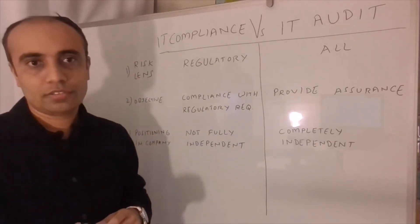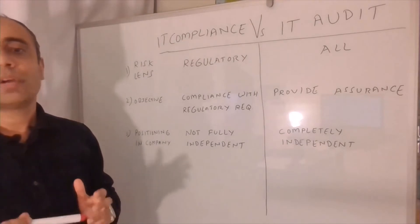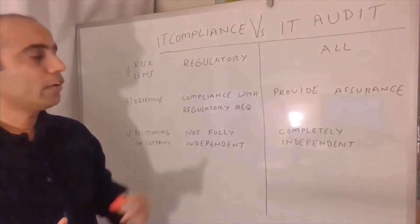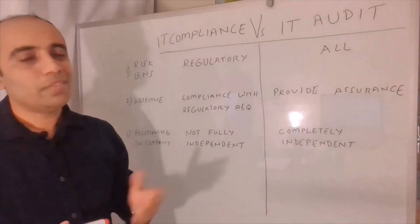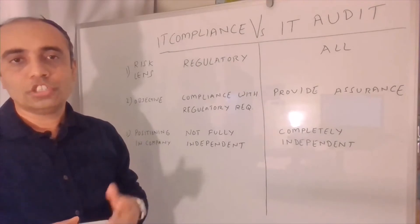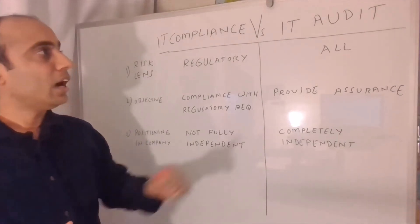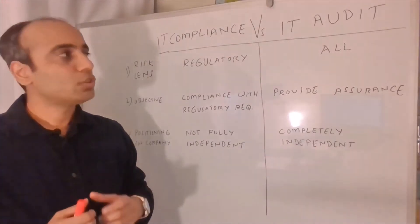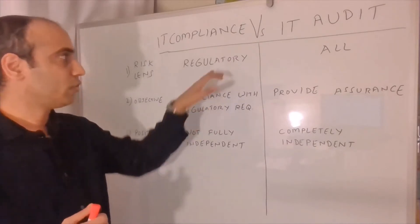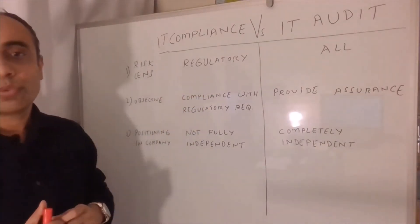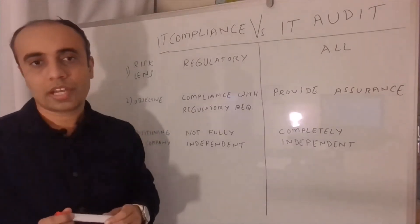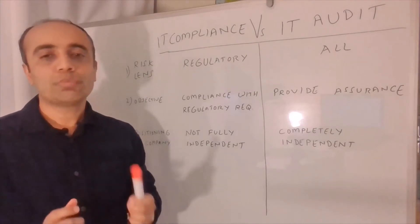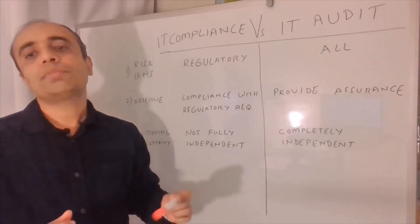The first difference is the risk lens — the risk areas covered as part of IT audit versus IT compliance. IT compliance is concerned with regulatory risk; examples include Sarbanes-Oxley in finance and GDPR in data privacy. While IT audit's risk coverage is much broader and covers all risks related to the company, not just regulatory risk. I've created separate videos on risk which are helpful to understand these basic concepts, with links in the description.